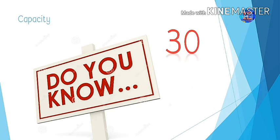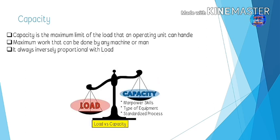Capacity has so many definitions. You can say the maximum limit of the load that any operating unit can handle is called capacity, or the maximum work that can be done by any machine or man is called capacity. In the further slides I'll explain more about capacity in the types of capacity.